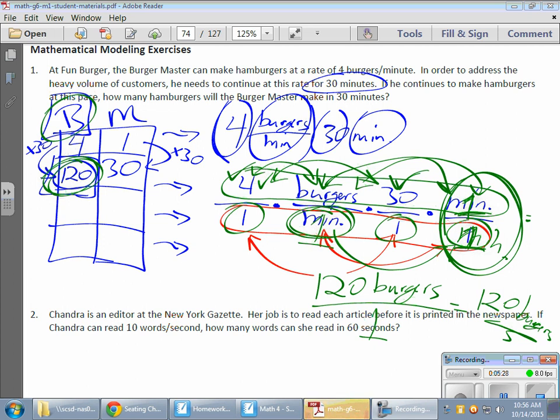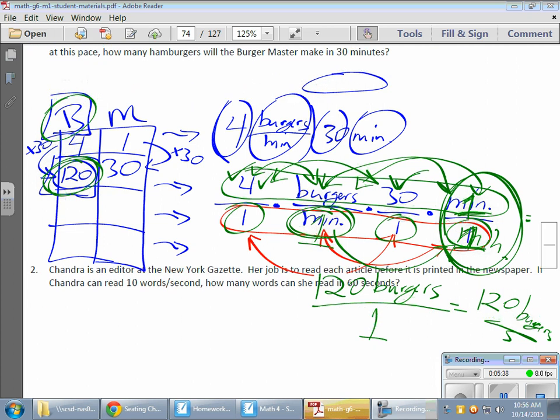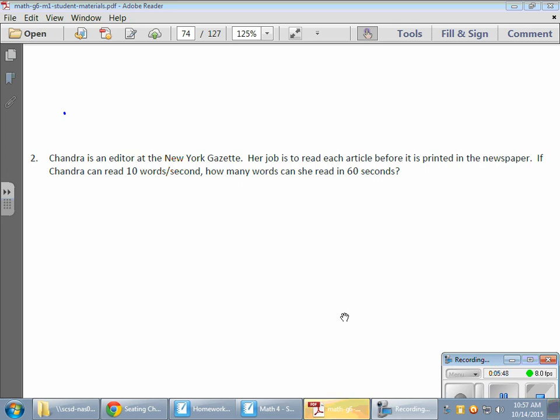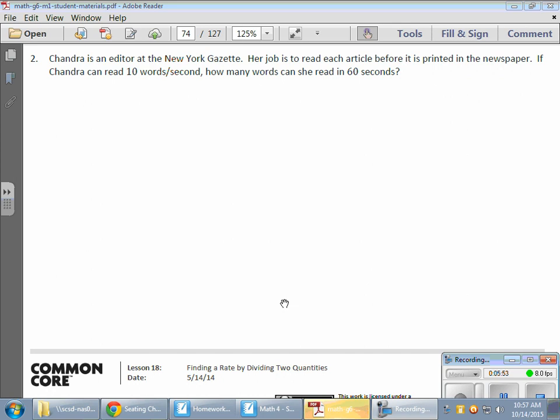All right. Now, that looks like a big old nest. And it sure does. But I'm going to do the next one. And it'll look a little more clean. So, here we go. Let me scroll down here. First, I have to erase some things, apparently. Let me get rid of all that. Good. So, here we are. So, we have Chandra. And she's the editor of the New York Gazette. And her job is to read each article before it is printed in the paper. She can read 10 words per second. So, how many words can she read in 60 seconds? So, let's begin.